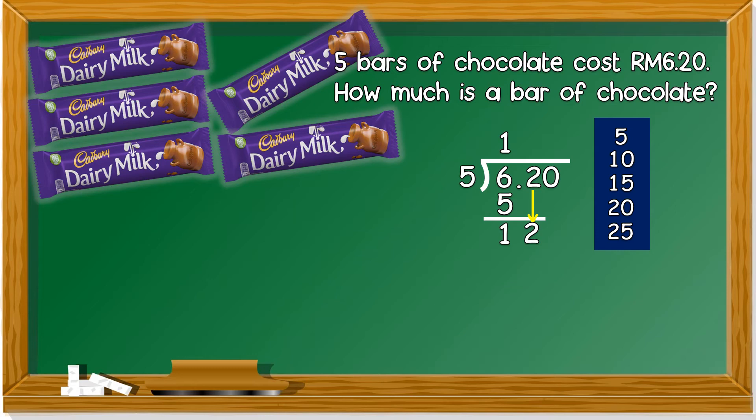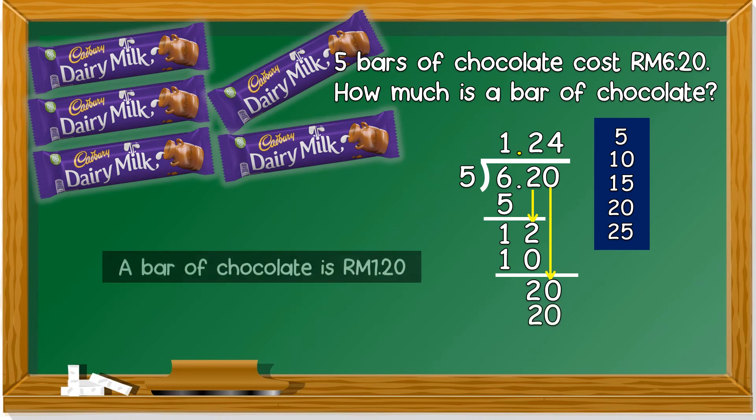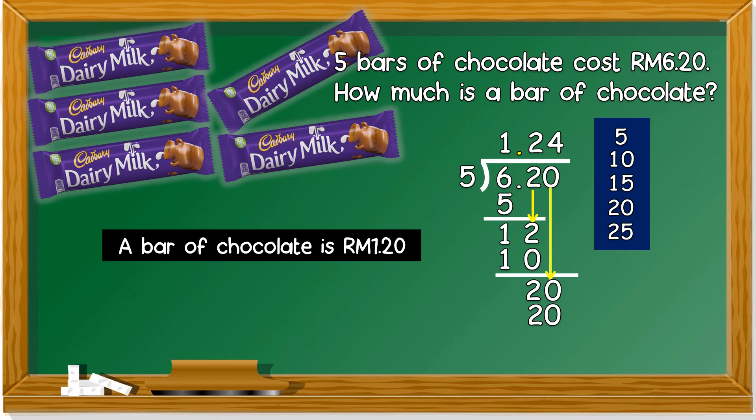So we bring down 2. Now 1 and 2 side by side is 12. 12 divided by 5, the nearest number is 10. So what times 5 equals to 10? 2. You minus 10. 12 minus 10, 2 minus 0 is 2, 1 minus 1 is 0. We bring down 0. 20 divided by 5 is 4. So the answer, you don't have remainder. A bar of chocolate is RM1.24.